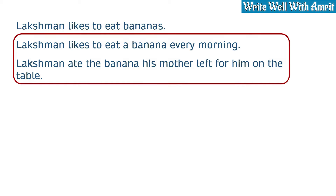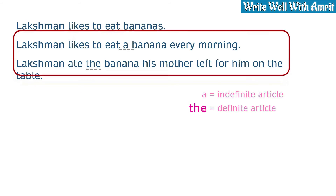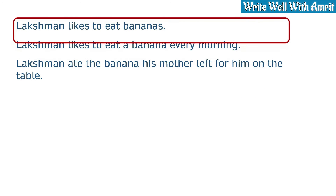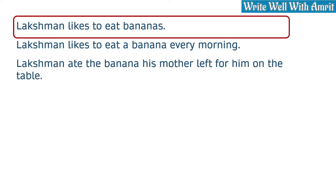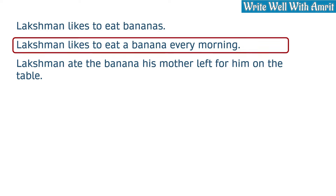Sentences 2 and 3 have determiners 'a' and 'the' respectively. In the first sentence, it isn't specified which banana or bananas Lakshman eats — you don't know the quantity or the nature of the bananas. In the second sentence, you know that Lakshman eats one banana every morning. The quantity is determined, hence 'a' is the determiner here.